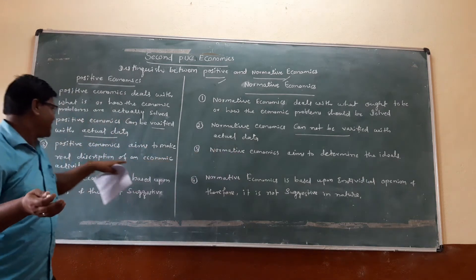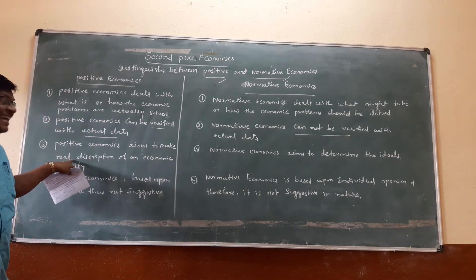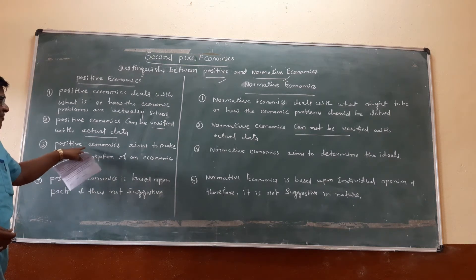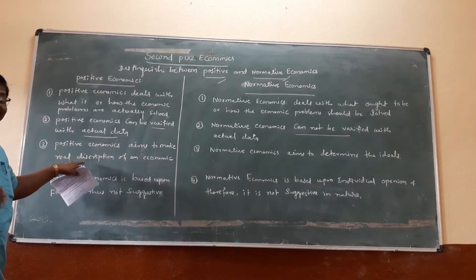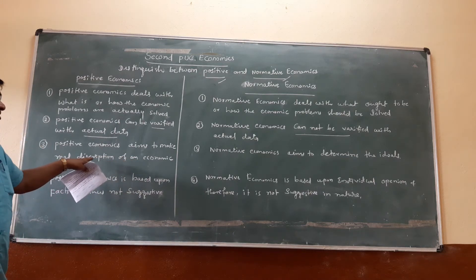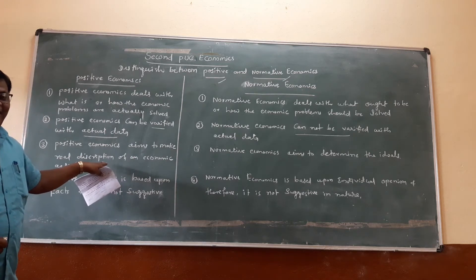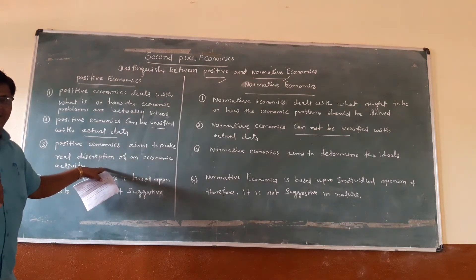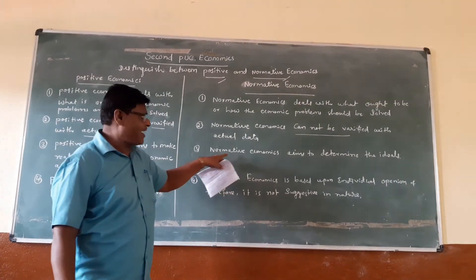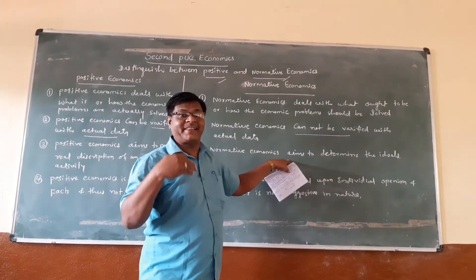The third point: positive economics aims to make a real description of an economic activity. It studies only the description of an economic activity. In the case of normative economics, it aims to determine the ideal — normative economics aims to determine idealism.